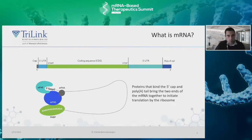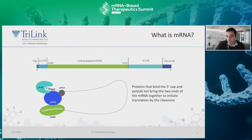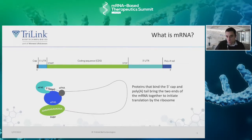Starting with the 5' cap — this region is the main recognition site by the ribosome for initiation of translation. One important point is using a naturally occurring cap structure, known as a cap-1 structure, which is very important when creating a viable mRNA. This structure will be recognized as self by the cell's ribosome and immune system and will aid in active translation of your protein. Other cap structures, such as cap-0, are often recognized as foreign by the cell's immune factors, causing degradation and leading to significantly lower levels of expression.